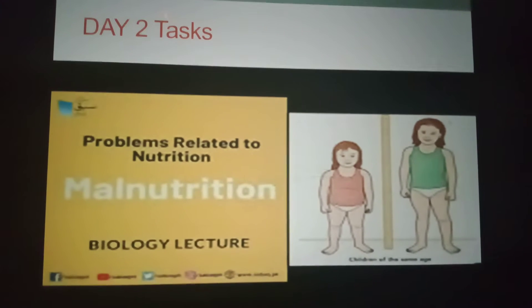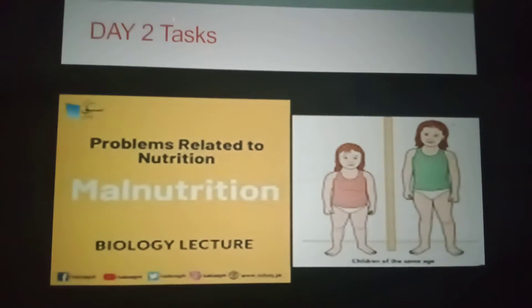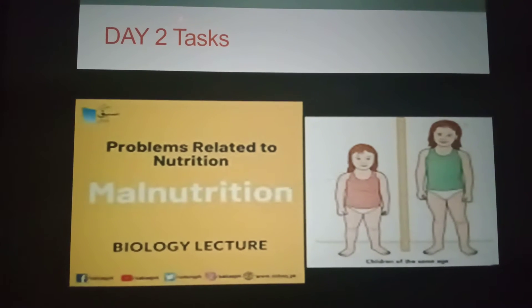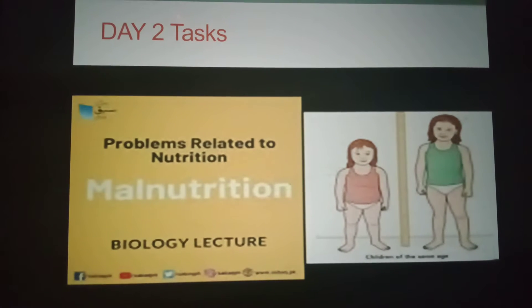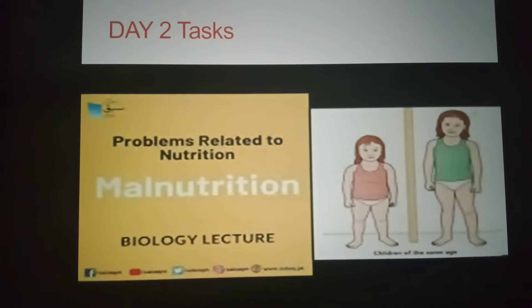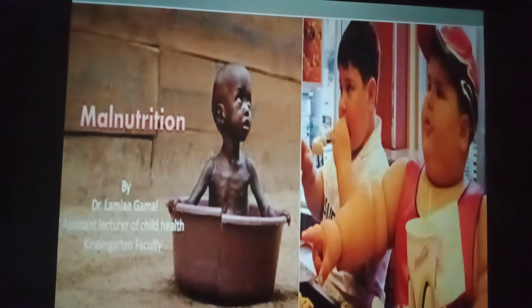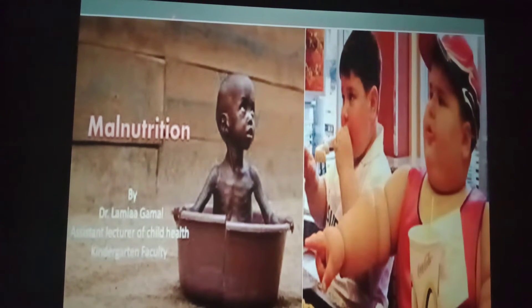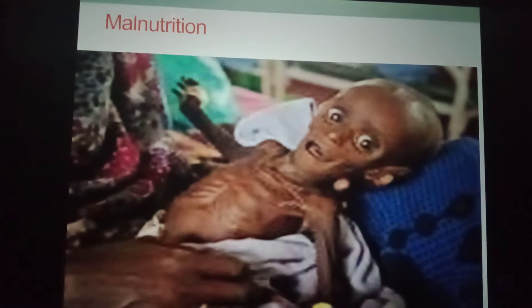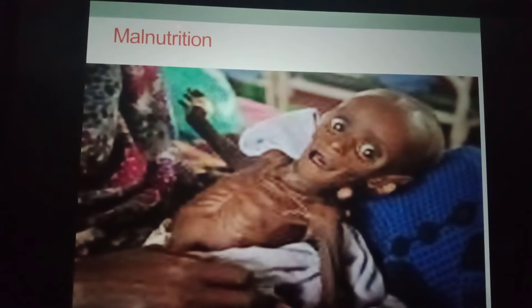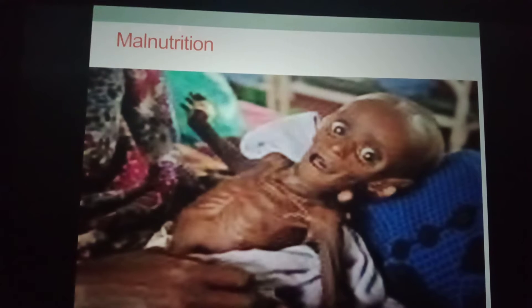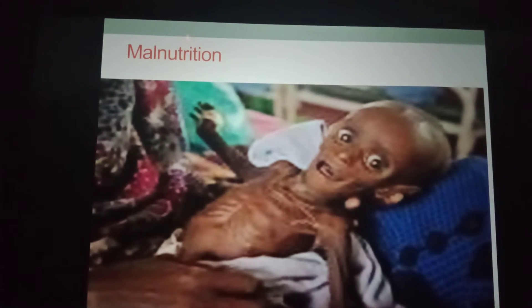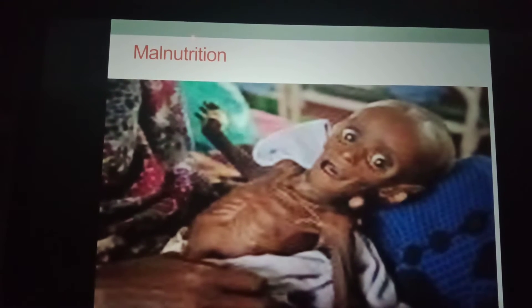Day two tasks are to understand about problems related to malnutrition. Problems related to nutrition are grouped as malnutrition. It refers to under-nutrition resulting from inadequate consumption, poor absorption, or excessive loss of nutrients. Malnutrition also includes over-nutrition resulting from excessive intake of special nutrients. Malnutrition weakens the immune system, impairs physical and mental health, slows thinking, stunts growth, and affects fetal development.